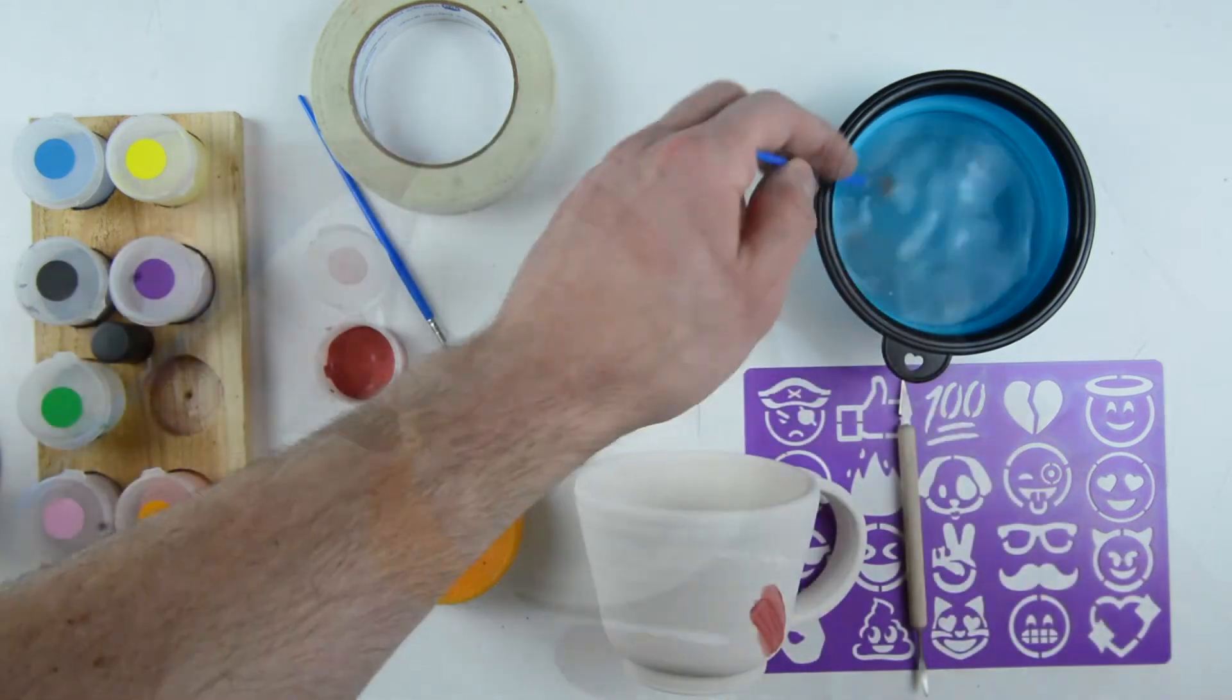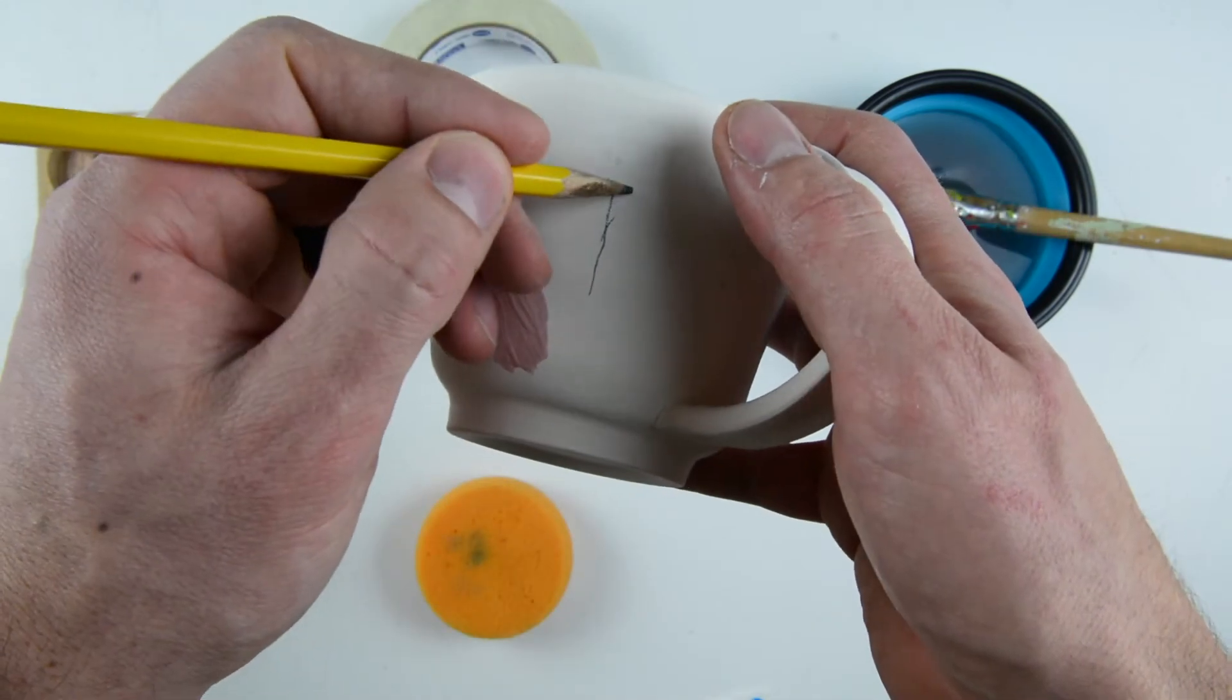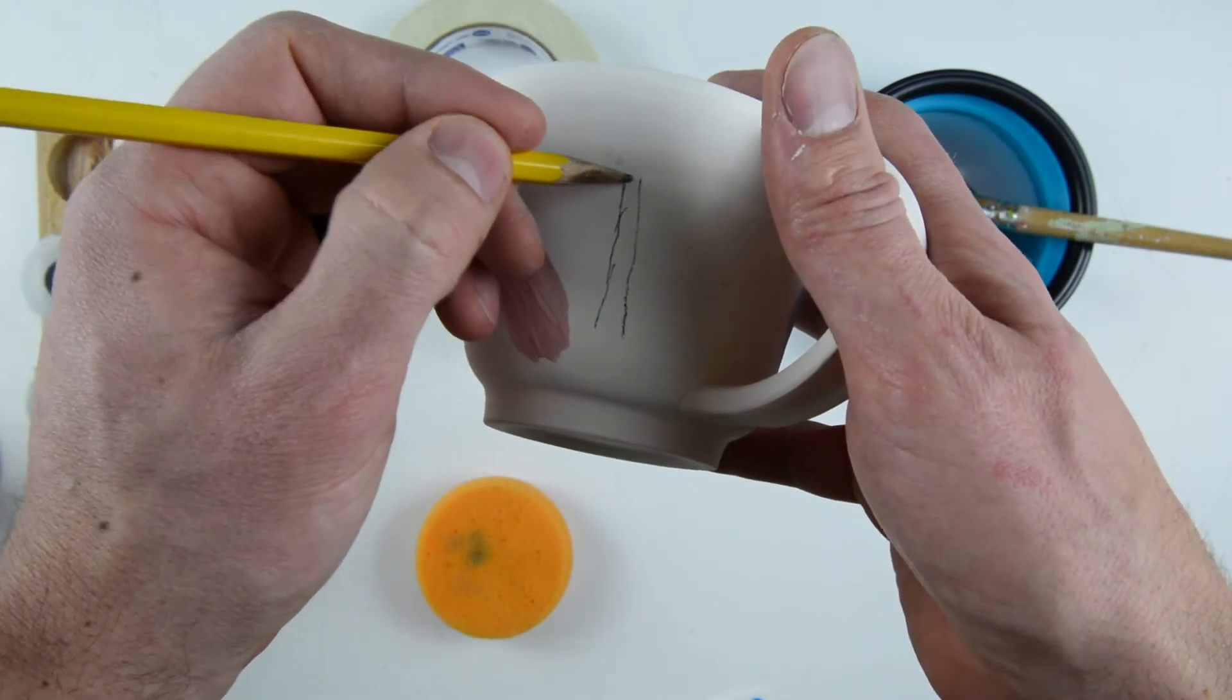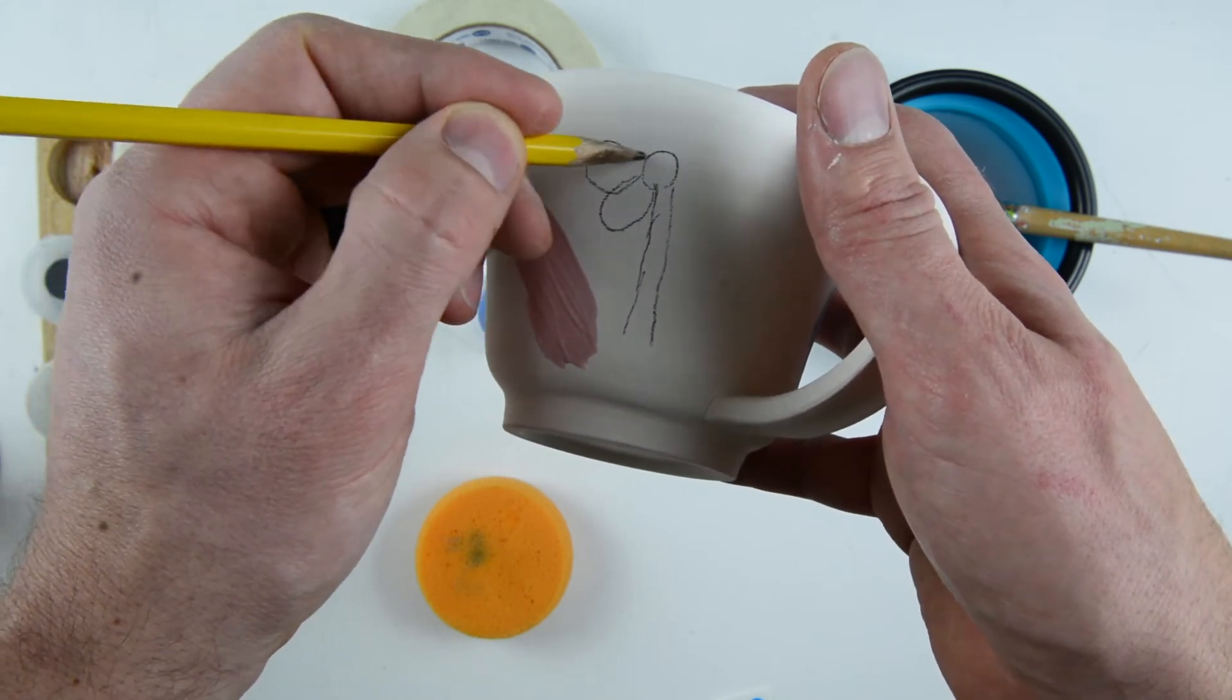If you decide to switch colors, please wash off the brush in the water and dry it off with a paper towel or sponge. You can use a pencil to freehand any designs you want on the mug. It doesn't end up showing after it's heated because all the graphite ends up burning off.